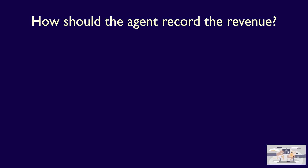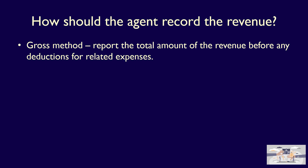Since MaxSold is an agent, what should they record as revenue? There are two possible answers. MaxSold could use the gross method or the net method. The gross method is the total amount of revenue before any deductions for related expenses. If MaxSold uses the gross method, they would record the following: a debit to cash and a credit to revenue for $100. This is the amount of revenue before any deductions for related expenses.